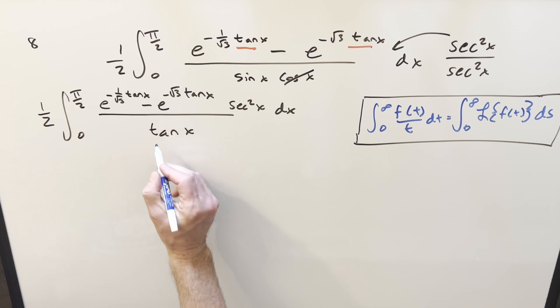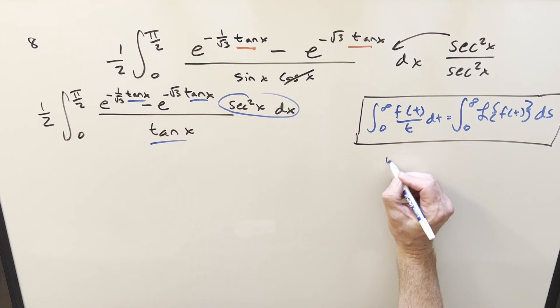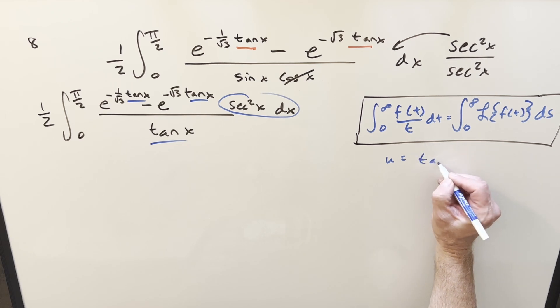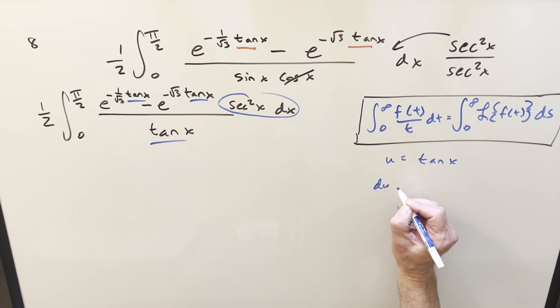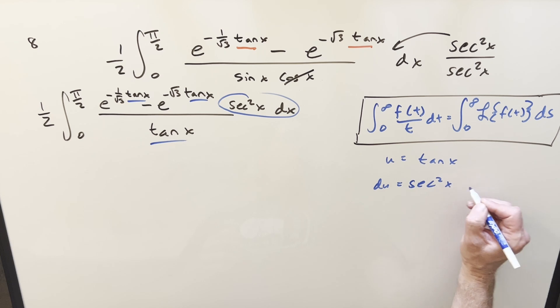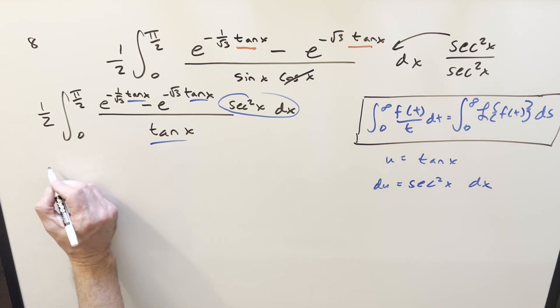Doing it that way, now we're perfectly set up for the u substitution because we've got tan everywhere and the derivative of tangent right here. So for the u sub, I'll do u equal to tan of x, du equals secant squared x dx.